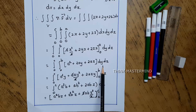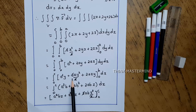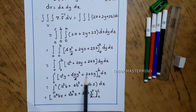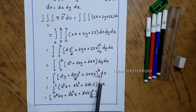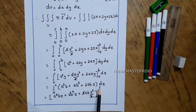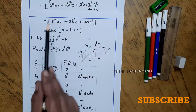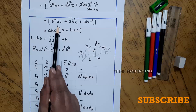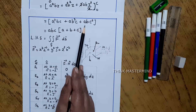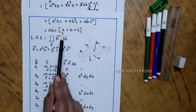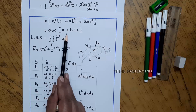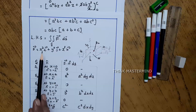Similarly integrating with respect to y — giving a²y + 2ay²/2 + 2azy — and substituting limit 0 to b, we proceed. Then integrating with respect to z, we obtain a²bz + ab²z + 2abz²/2 (the factor of 2 cancels). Substituting the upper limit gives a²bc + ab²c + abc². Taking abc common: abc(a + b + c), which is the right hand side of the Gauss Divergence Theorem.